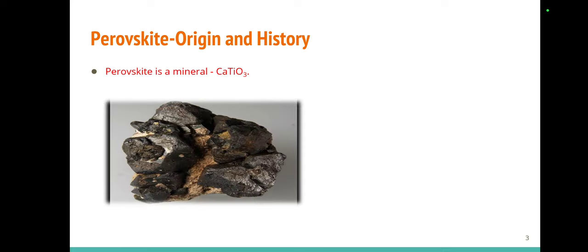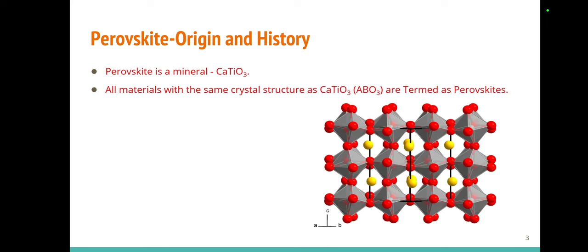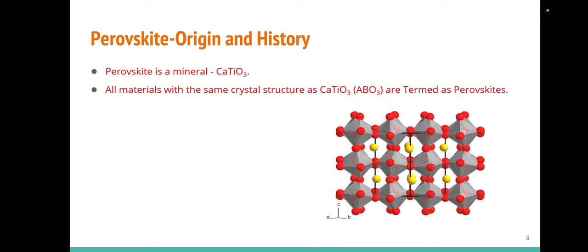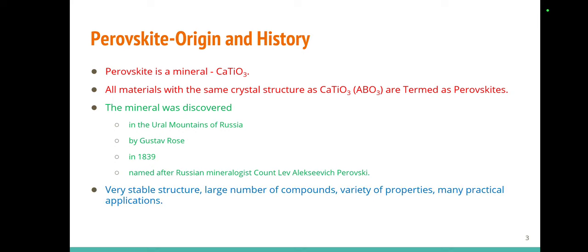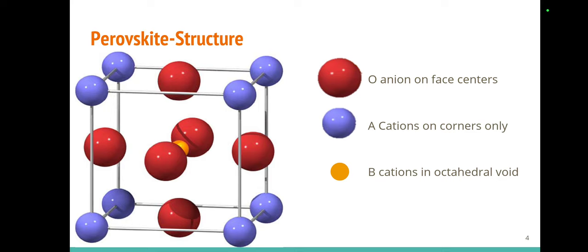Regarding the origin and history, perovskite was initially named for calcium titanate, and later all materials with the same crystal structure as calcium titanate were termed perovskites. This name was coined after the scientist Gustav Rose, who found them in the Ural mountains of Russia in 1839. These compounds are very stable in structure and can be found in a large number of compounds with a variety of properties and applications in dielectric and magnetic fields.